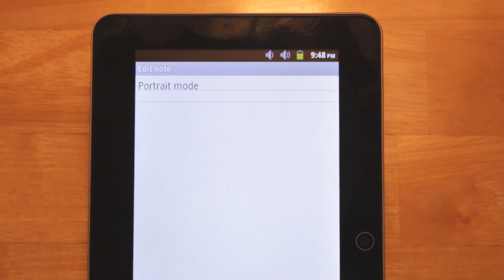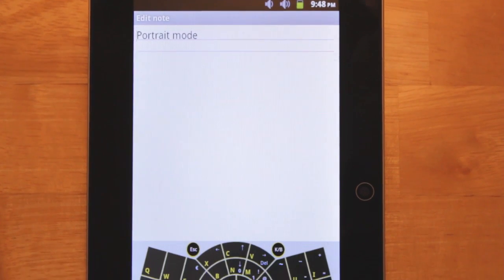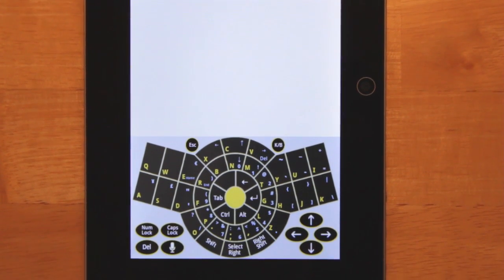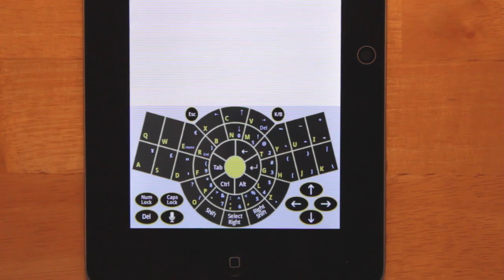Make sure the Radial Keyboard is your default keyboard. Launch any app that uses text editing and the Radial Keyboard will appear whenever you begin to enter text.